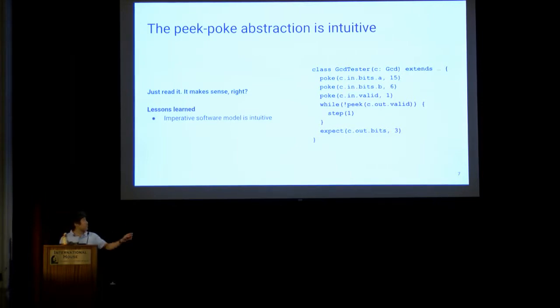Overall, that snippet of code should hopefully just make sense. The takeaway is the imperative software model or the linear-in-time model is pretty comprehensible. And given a bit of understanding about the ubiquitous decoupled-ready-valid interface, this also provides executable documentation about how you can use GCD.